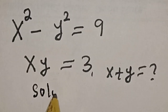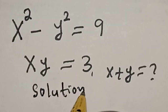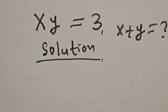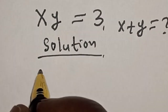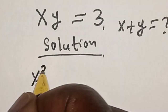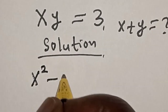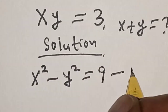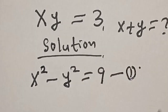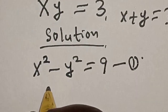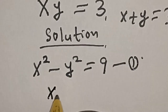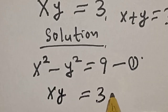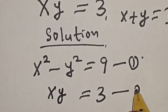Solution. We have the given question: x squared minus y squared is equal to 9 — let's call this equation 1. Then also, xy is equal to 3 — let's call this equation 2.